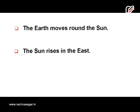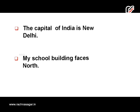For general truth: 'The earth moves round the sun' and 'The sun rises in the east.' These are examples of general or universal truth, which falls under simple present tense. Vivid narrative includes expressing a situation or fact that is permanent, such as 'The capital of India is New Delhi' and 'My school building faces north.'